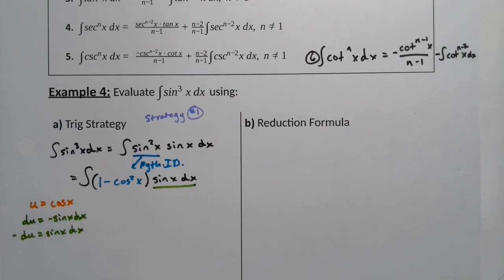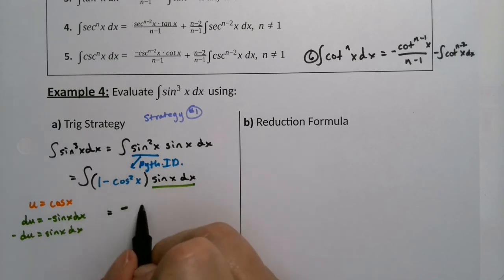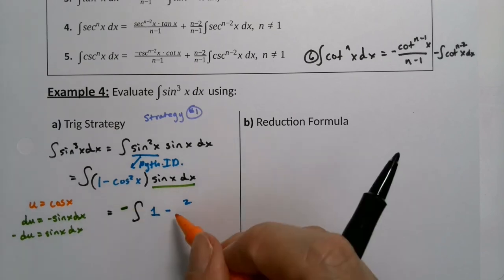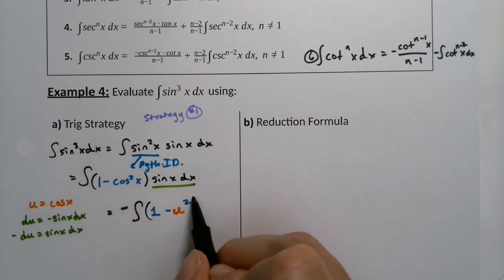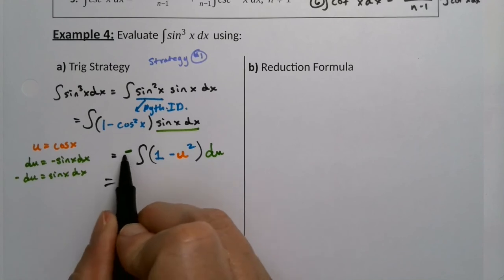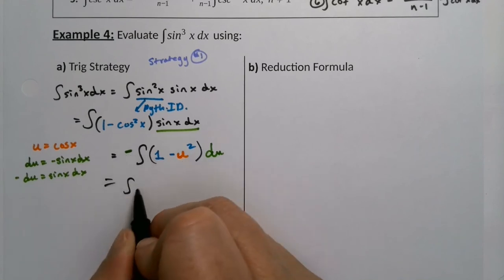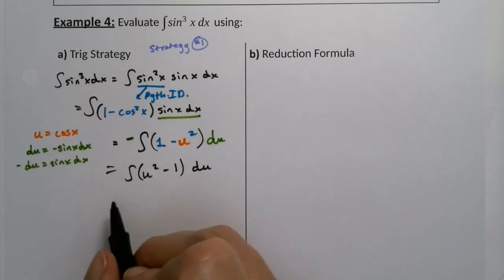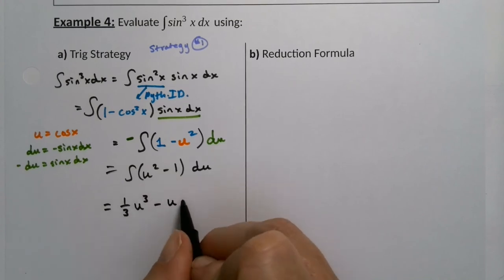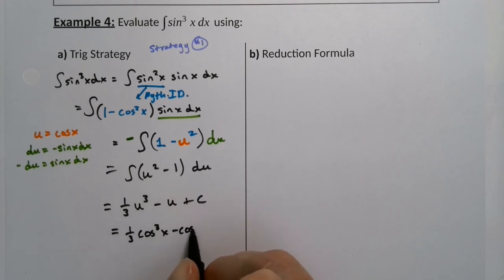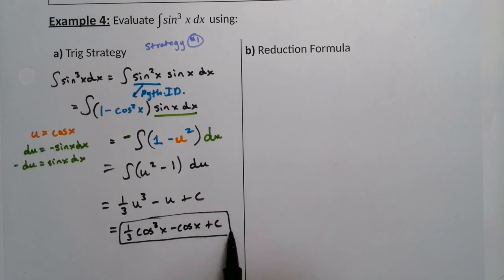Substituting, we rewrite the integral as negative integral of 1 minus u squared du. Rewriting with the negative distributed, that's u squared minus 1 du, which gives us one-third u cubed minus u plus C, which is one-third cosine cubed x minus cosine of x plus C.